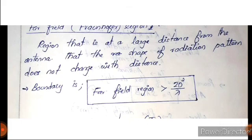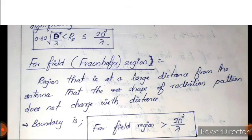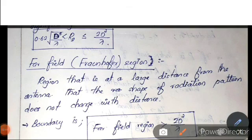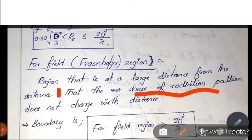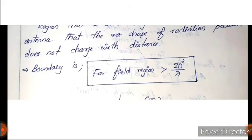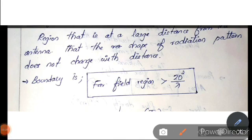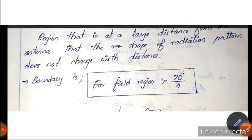The far field, also called the Fraunhofer region, is the region at a large distance from the antenna. The shape of the radiation pattern does not change with distance. This region is defined by R greater than 2D-squared divided by lambda.